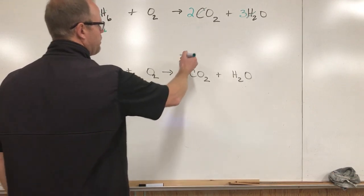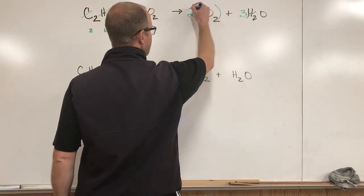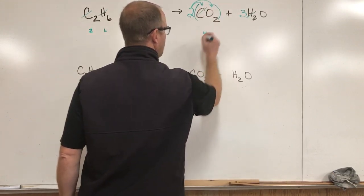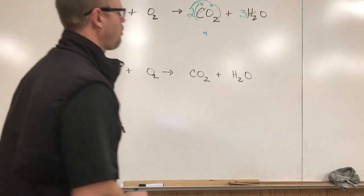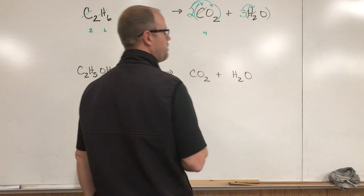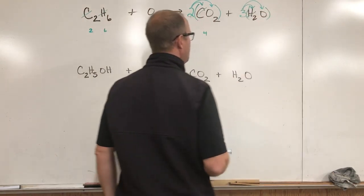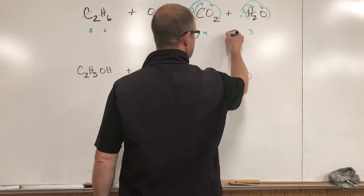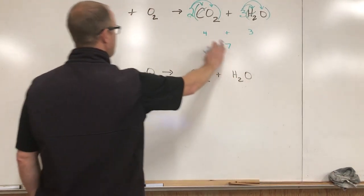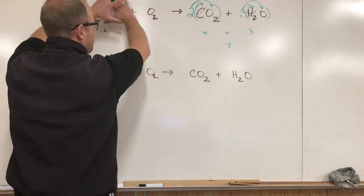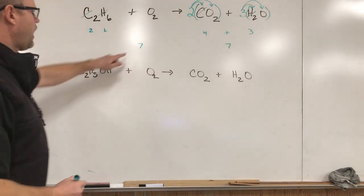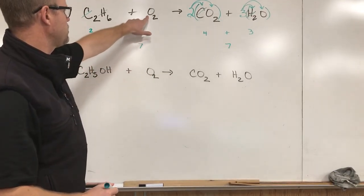Let's think about the distributive property in math. That two applies to everything in here, there's two carbons and there's two times two, there's really four oxygens over here. There's six hydrogens but there's also three oxygens. I need to add those together and I get a total of seven. I need to have seven oxygens on the other side total.